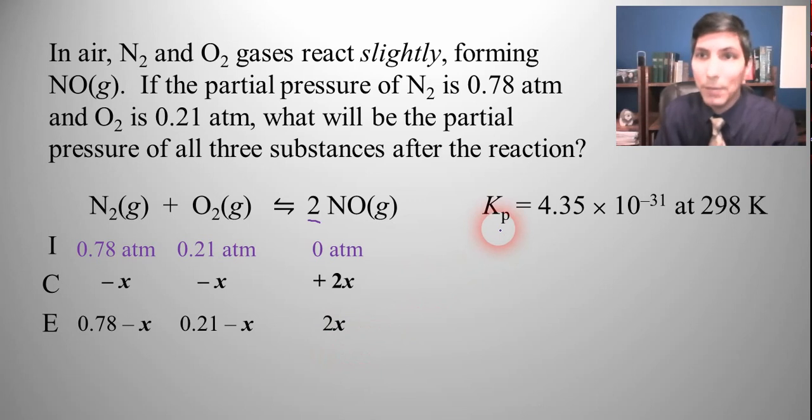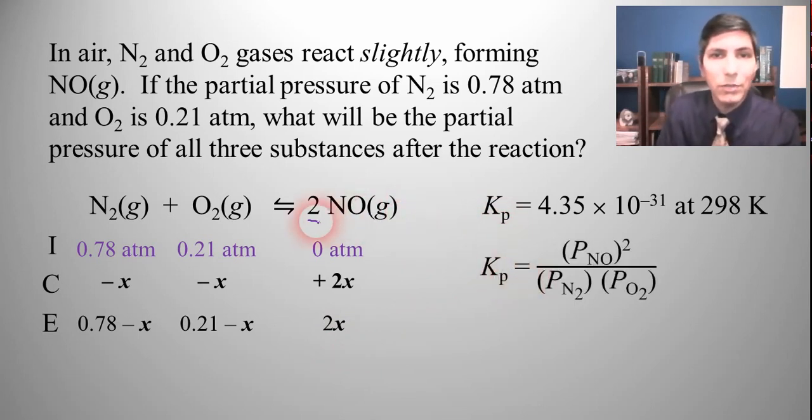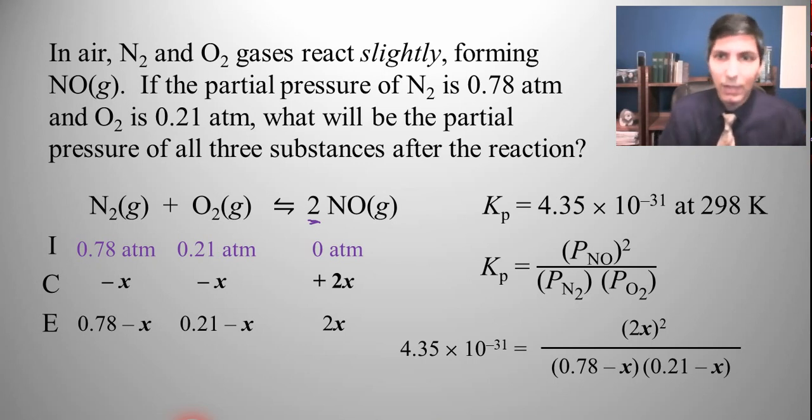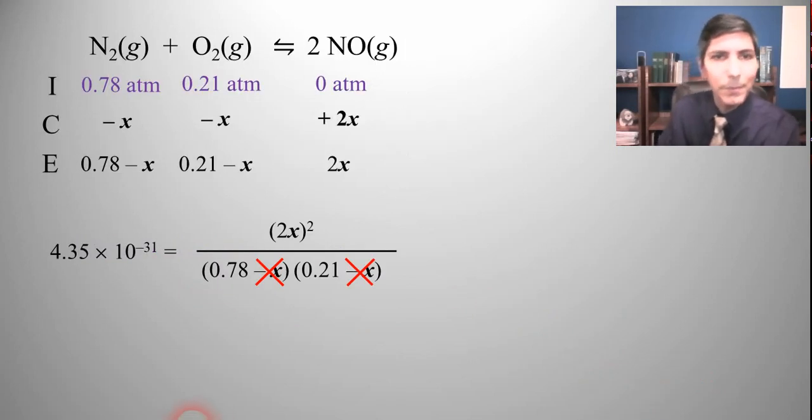So now let's plug these values into the equilibrium constant expression. Kp equals the partial pressure of NO squared over the partial pressure of N2 times the partial pressure of O2. So Kp is 4.35 times 10 to minus 31st equals NO which is 2x quantity squared over nitrogen is 0.78 minus x and oxygen is 0.21 minus x. Now as you can see if we foiled this out we'd have an unpleasant problem. But we're going to make it a lot easier. We're going to ignore this minus x right here and that minus x right there because it's safe to say with such a small equilibrium constant these minus x values are very negligible.